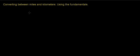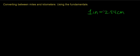In this session, we're going to convert between units of miles and kilometers using the fundamental relationship between the English system and the SI system, which states that one inch is exactly equal to 2.54 centimeters. There isn't a direct link between miles and kilometers, so we are going to have to do this conversion in a roundabout way.